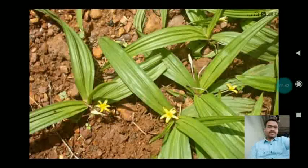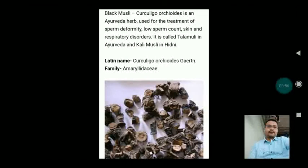Now on the screen is the drug called Talamuli, also known as Black Musli. Curculigo orchioides is an Ayurvedic herb used for the treatment of sperm deformity, low sperm count, and skin and respiratory disorders. It is called Talamuli in Ayurveda and Kali Musli in Hindi. The Latin name is Curculigo orchioides and it belongs to family Amaryllidaceae.